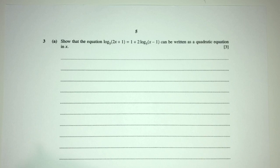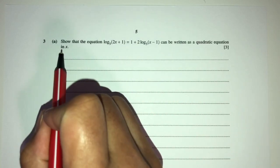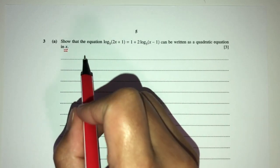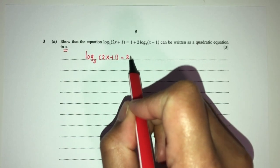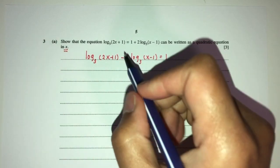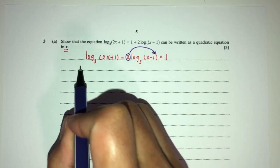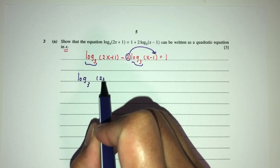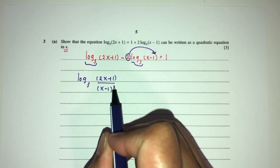Now let's move on to question number three. We have to show that this equation can be written as a quadratic equation in terms of ln x. Send all the logs to one side: log base 3 of (2x + 1) minus 2 log base 3 of (x − 1) = 1. The 2 becomes a power, and combining logs gives log base 3 of (2x + 1)/(x − 1)² = 1.